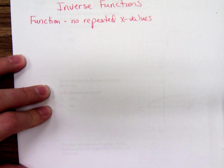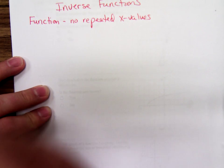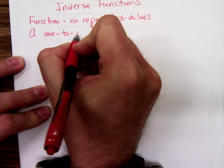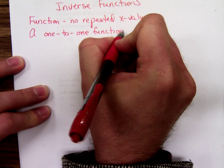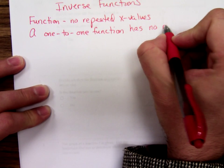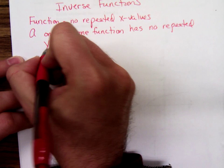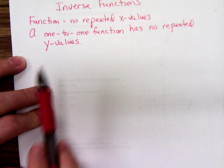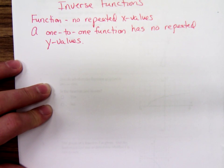The first thing we're going to do is define what we mean by a one-to-one function. A one-to-one function has no repeated y values. A function has no repeated x values; a one-to-one function has no repeated y values.